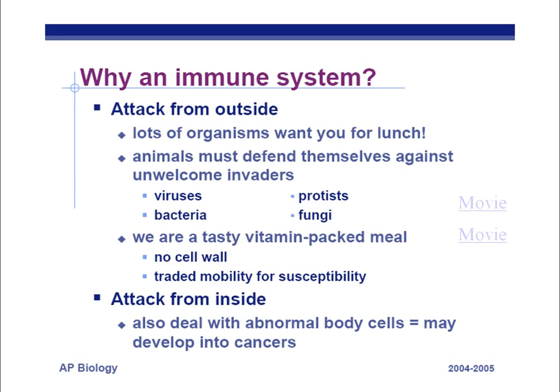So why do we have an immune system? We have two ways we can get attacked: from outside and from inside. From the outside, there are lots of organisms that find you delicious. They have enzymes to break down your tissues and can use that material for their own cell respiration, as well as for building up more bacteria, fungus, or whatever it is that's trying to eat you.